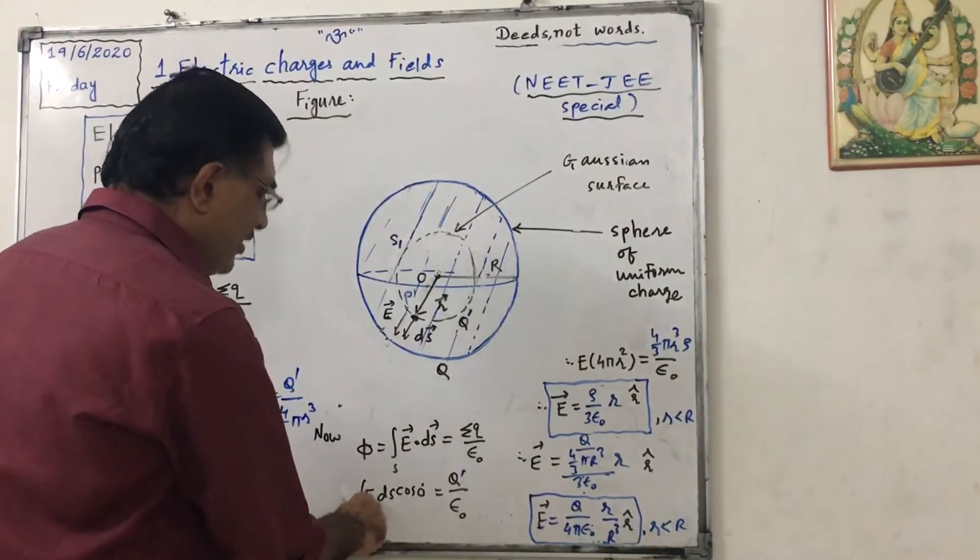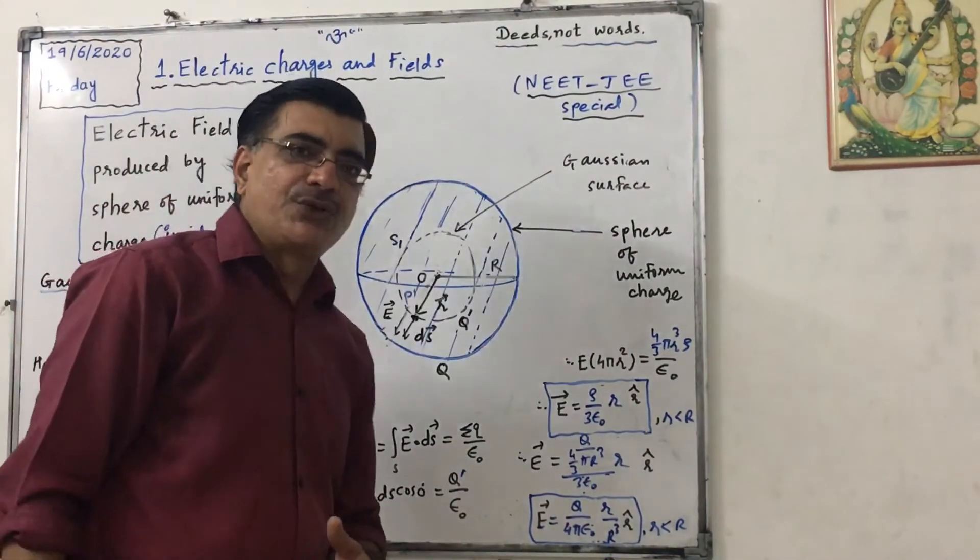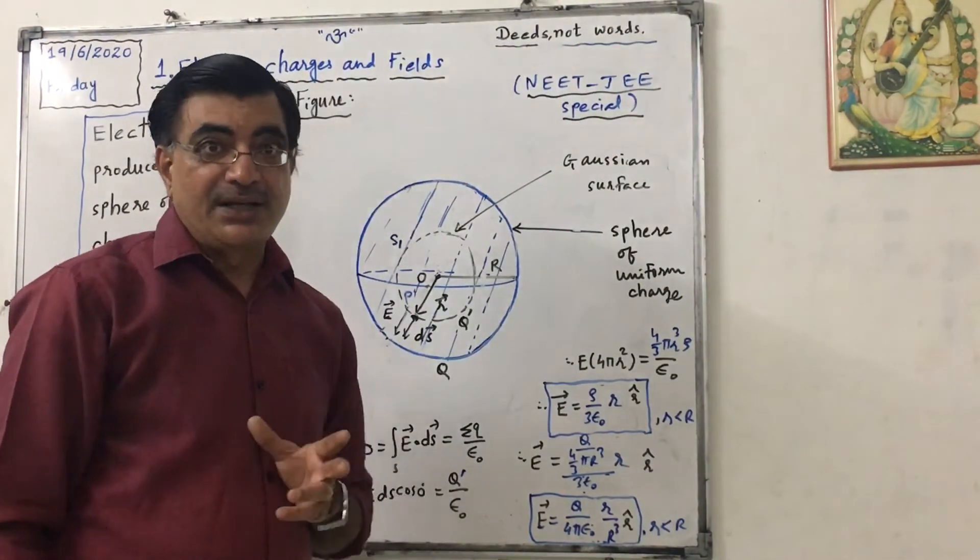So E, we know that at equal distance electric field will have same magnitude from uniform charge distribution and symmetry.